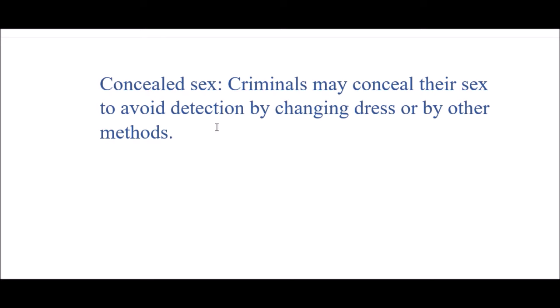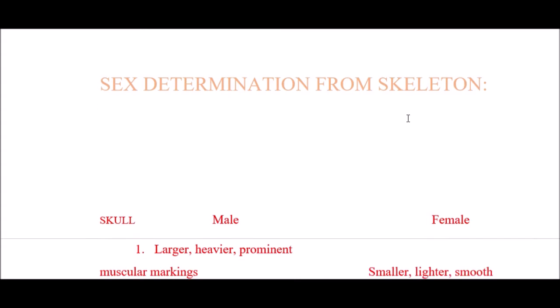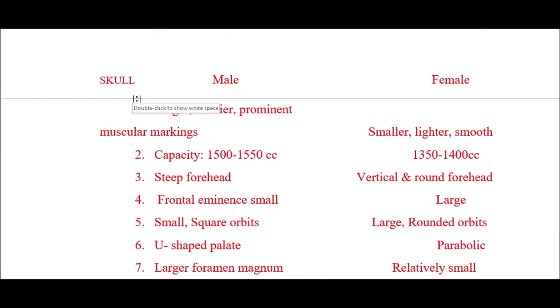Concealed sex means criminals may conceal their sex to avoid detection by changing dress or other methods. Regarding sex determination from skeleton by skull: gross features of the skull can differentiate between male and female. The male skull is larger, heavier, and has prominent muscular markings. The female skull is smaller, lighter, and smooth, without prominent muscular markings.